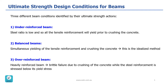We can also see similar plastic behavior in steel structures. The second condition, which is balanced beam, is basically simultaneous yielding of tensile reinforcement and crushing of the concrete. This is an idealized method and is a condition to differentiate between under and over-reinforced beams.